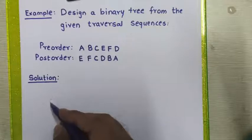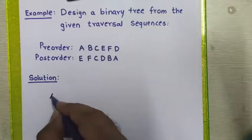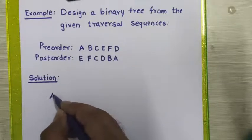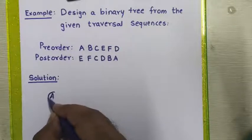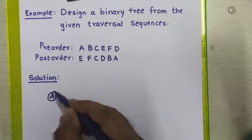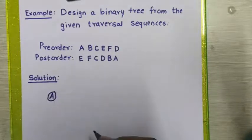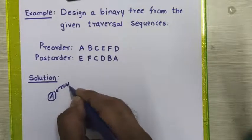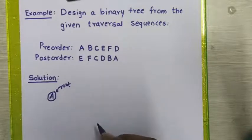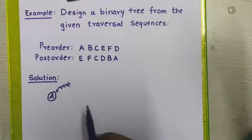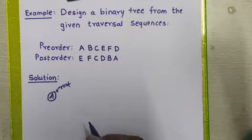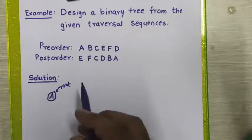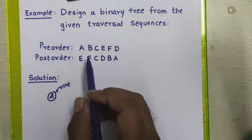We'll draw the root node into the solution. The first node we design in the binary tree is A, which is the root node.